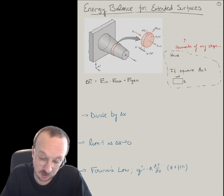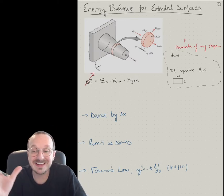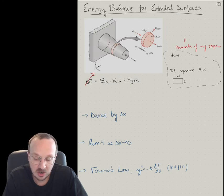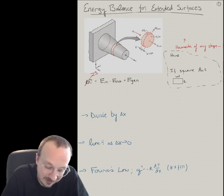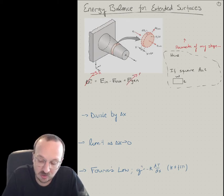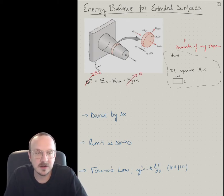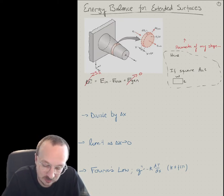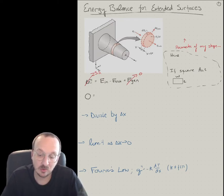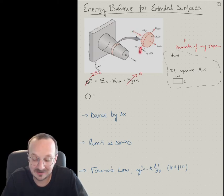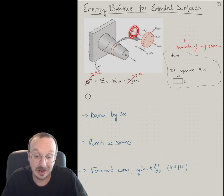We're talking about 1D steady state conduction, so there's no accumulation and no change in energy. Generally there's no generation on a fin or extended surface, so we just have energy in equals energy out. So zero equals the energy going in to the control volume at location x, which is just qx — the flux times the cross-sectional area at location x.